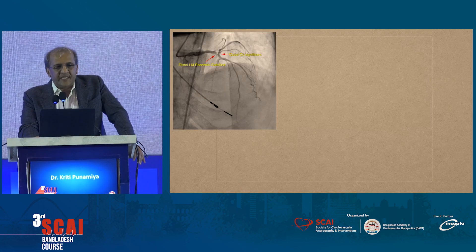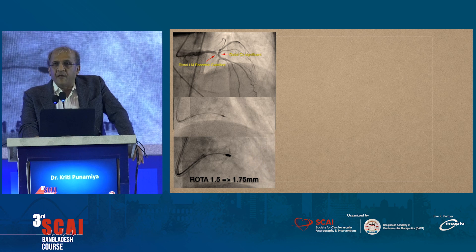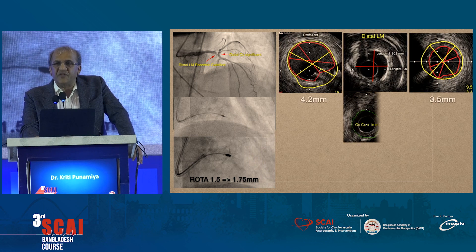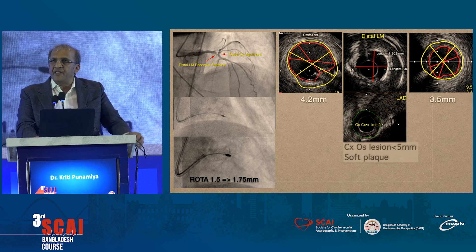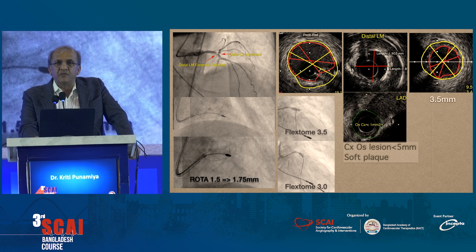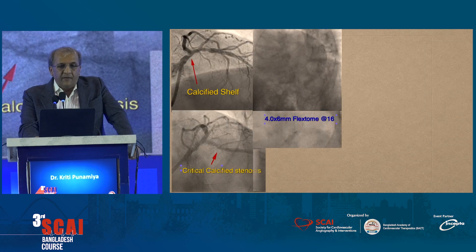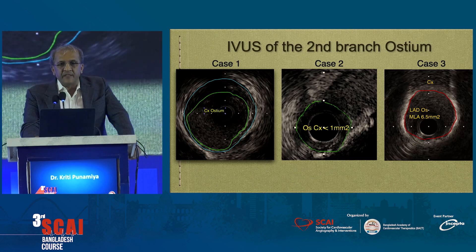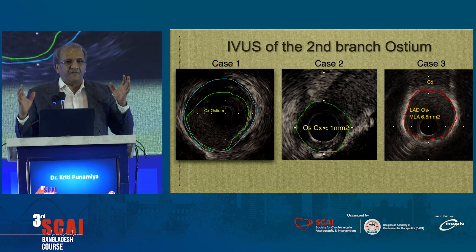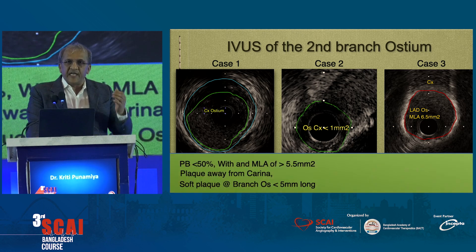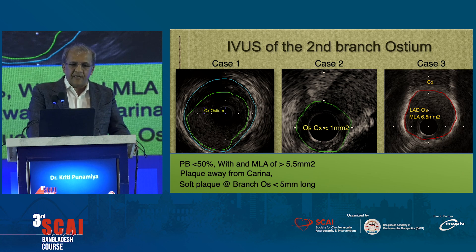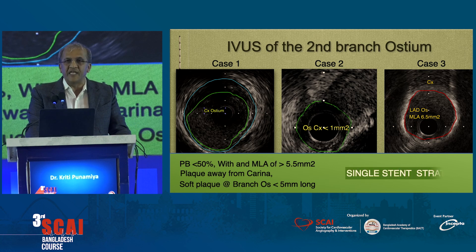Here is one example where we had a left main — we did a rotablator, advanced the rotablator, then did a cutting balloon. The ostium of the circumflex was soft and very discreet. So all we did was a cutting balloon in the left main and a cutting balloon in the ostium of the circumflex, and still got away with a provisional stent. We have similar cases, but what we realized is that when the ostium of the second branch has these findings — a plaque burden less than 50%, an MLA more than 5.5, plaque away from the carina, and soft plaque less than 5 millimeters — we can get away with a single-stent strategy.